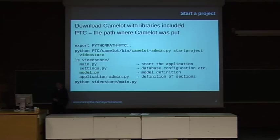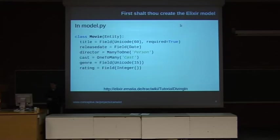And then the application admin file, which contains how your application should look like. So the first thing you have to do is create your Elixir model. This is very easy, it's just like defining a plain old Python object. So here we have a movie class which extends the entity class, and the entity class is actually a base Elixir class. It just tells Elixir that the movie object should be mapped to the database. So in your database you will have a table called movie with a column for every field in this class.